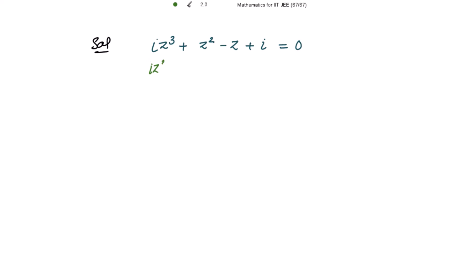We rewrite -z by using the identity iota² = -1, so -z can be written as +iota²·z. The equation becomes: iota·z³ + z² + iota²·z + iota = 0.